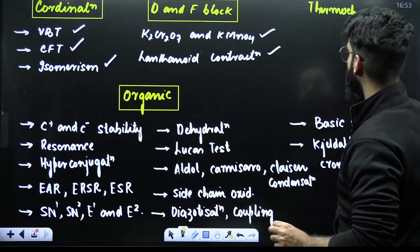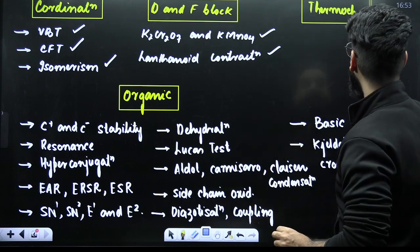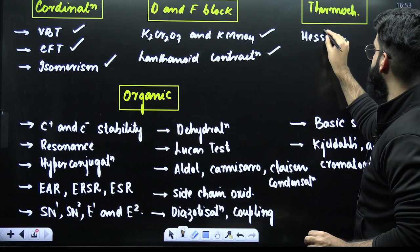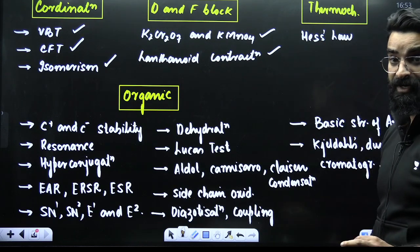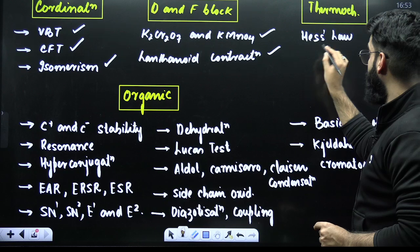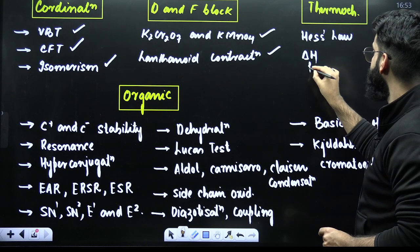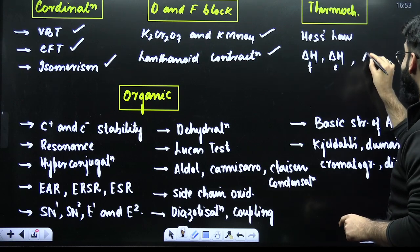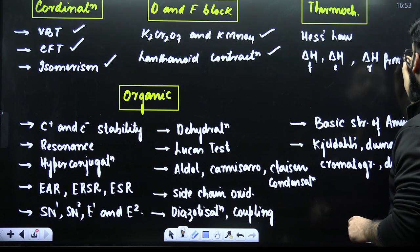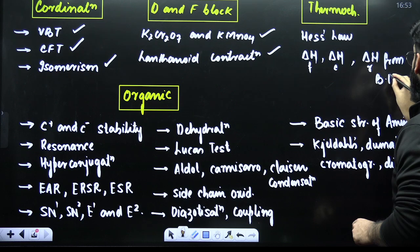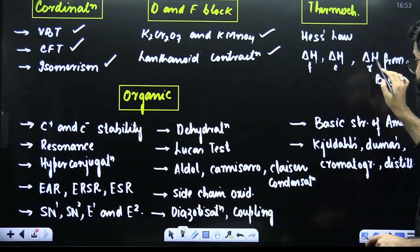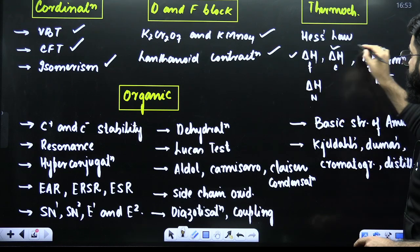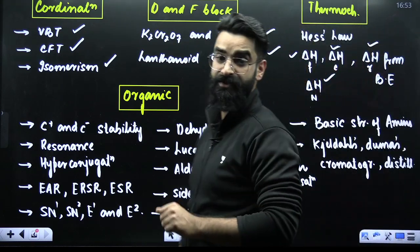In thermochemistry, what exactly will be asked, my dear students. Let me first of all tell you. You would have studied the Hess's Law. I'm sure about that. This is the favorite topic in the chapter thermochemistry. Number one. Number two, your enthalpy of formation, enthalpy of combustion, enthalpy of formation, enthalpy of combustion, and enthalpy of reaction from bond energy. Enthalpy of formation, enthalpy of combustion, enthalpy of reaction from bond energy, and your enthalpy of neutralization. These are the four sure-shot topics which are asked from the chapter thermochemistry.